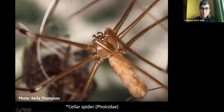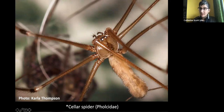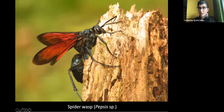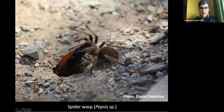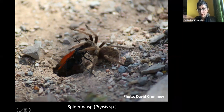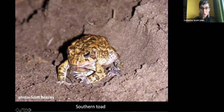Lizards eat spiders — alligator lizards are important black widow predators on the west coast. Cellar spiders will eat other spiders much bigger than themselves, including black widows. Wasps are probably the most important spider enemies: spider wasps find a spider, sting and paralyze it, take it back to their burrow, lay an egg on the spider, close up the burrow, and the hatching wasp larva eats the spider alive.